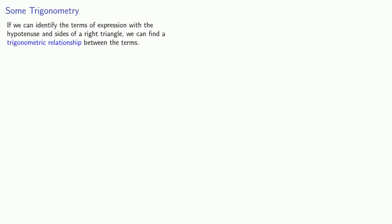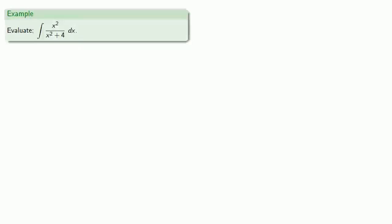If we can identify the terms of an expression with the hypotenuse and sides of a right triangle, we can find a trigonometric relationship between the terms. For example, let's consider the integral of x squared over x squared plus 4. In this particular integrand, the denominator x squared plus 4 is problematic, so let's see if we can construct a right triangle where this expression x squared plus 4 comes up naturally.